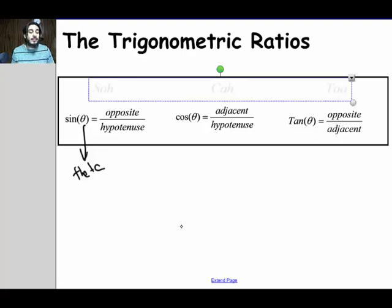You can remember these easily if you remember this mnemonic device, SOHCAHTOA. So you can see SOH opposite over hypotenuse, CAH adjacent over hypotenuse, TOA opposite over adjacent.